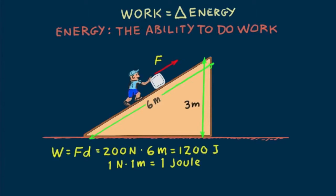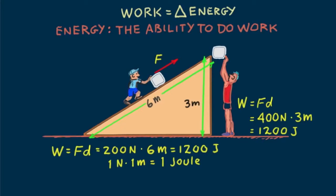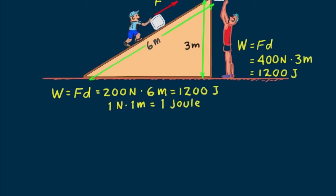Suppose the same block were lifted vertically to the same location. Then the work done in lifting it is the full weight of the block multiplied by the three-meter height — that's 400 Newtons times 3 meters, which equals the same 1200 joules. So the 1200 joules of energy acquired by the block is the same whether you slide it up the ramp or simply lift it three meters vertically. The 1200 joules depends only on its change in elevation, the height to which it's raised.